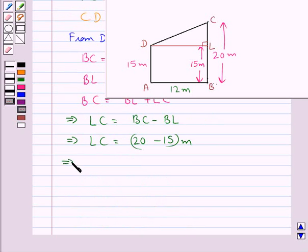So this gives LC is equal to 5 meters. In the same way we also have AB is equal to DL, which is equal to 12 meters.